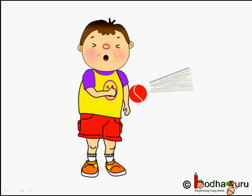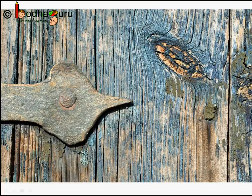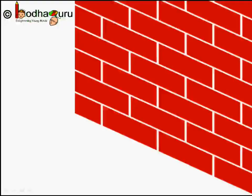If a fast moving ball hits you, it really hurts. But if a slow moving ball hits you, you don't feel much. If you throw a stone at a wall, the wall wouldn't get damaged. But if you fire a shot at the wall, it would make a hole in the wall — a small fast moving bullet applied more force than the bigger stone. So, the impact produced by objects depends on both the mass and the velocity.